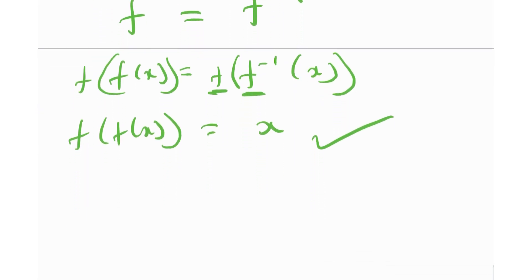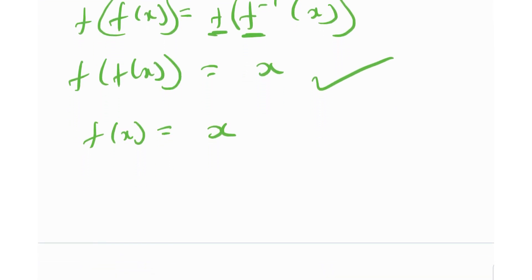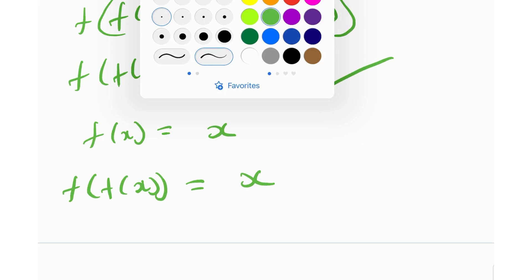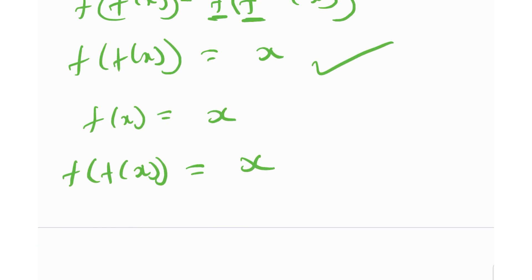There are many examples of involution functions. A classic example is f(x) = x — the identity function is indeed an involution, since f(f(x)) = x. The interesting result is that all involutions are bijective — meaning they are both injective and surjective, one-to-one and onto.